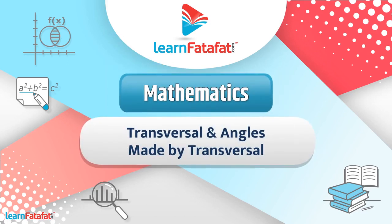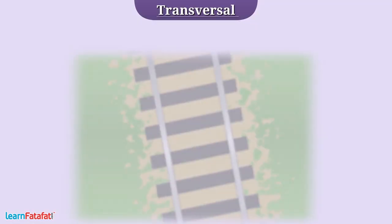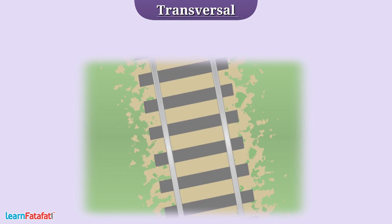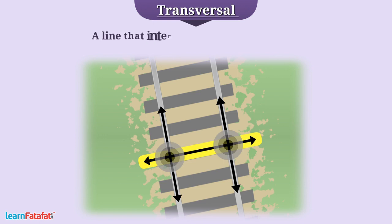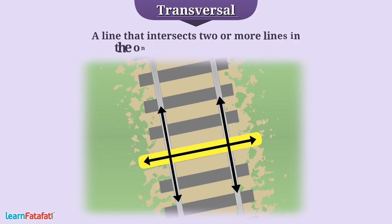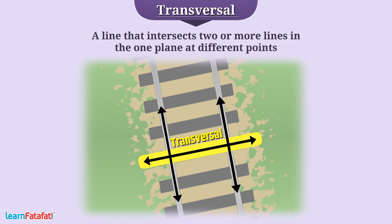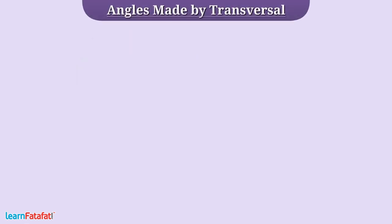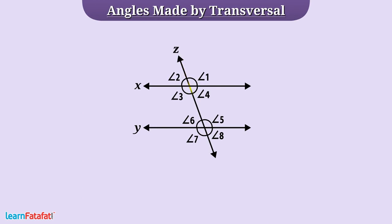Today, we will learn about transversal and angles made by transversal. You might have seen a railway line in which one line intersects two lines. A line that intersects two or more lines in one plane at different points is called a transversal. Here, line Z is intersecting line X and line Y at different points. That's why line Z is a transversal.